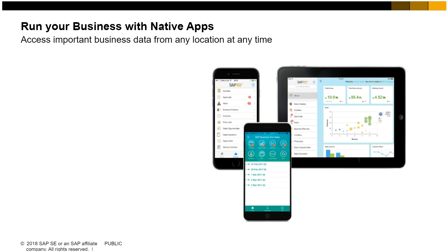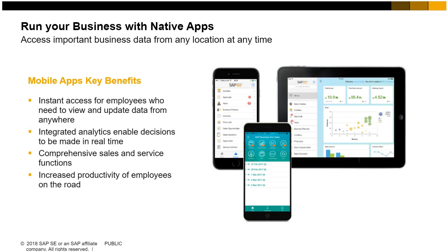SAP Business One for iOS and Android devices covers all important business processes, so employees who are on the road or in remote locations — like a service technician — can get the information they need to resolve customer issues, capture orders, or see information contained in Business One, like customer and supplier contacts. It reduces frustrations associated with being away from the office, helping make people more productive on the road. Key benefits include instant access for employees to view and update data from anywhere, integrated analytics for real-time decisions, comprehensive sales and service functions, and increased productivity of employees on the road.